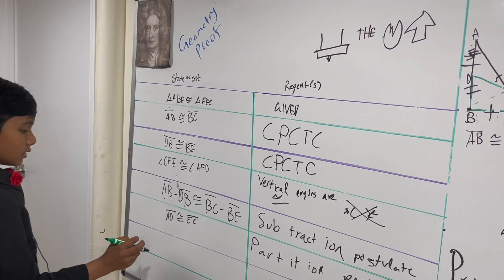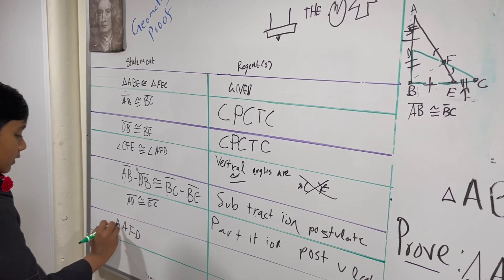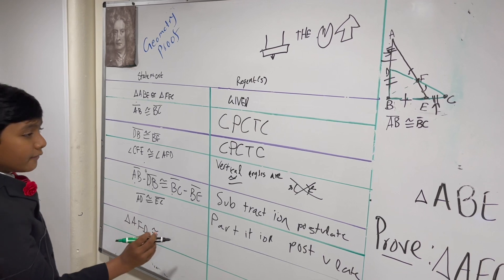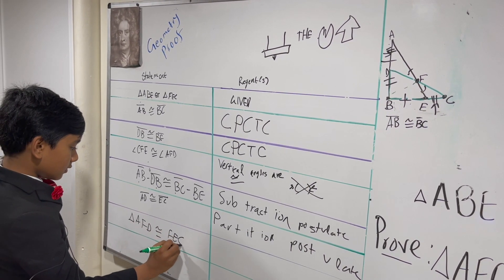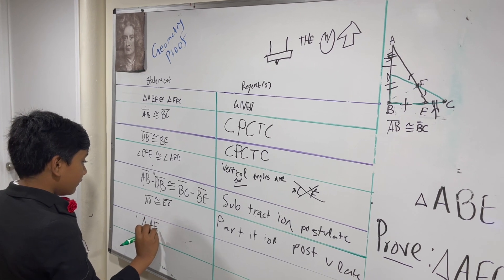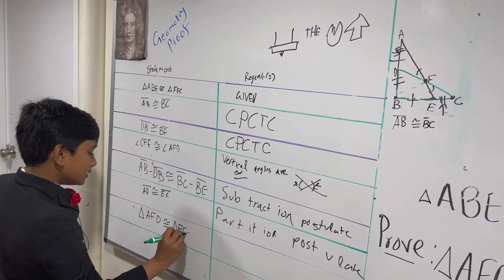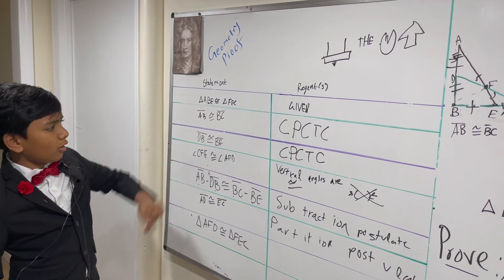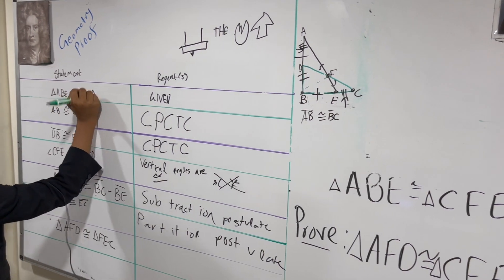That means that AFD is congruent to CFE by AAS — angle, angle, side. Wait, did I write something wrong at the beginning? It's not FEC — it's CFE. So AFD is congruent to CFE.